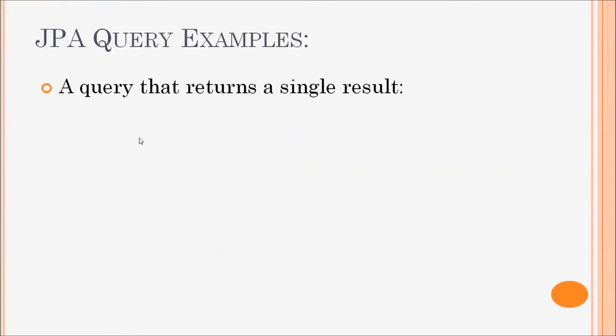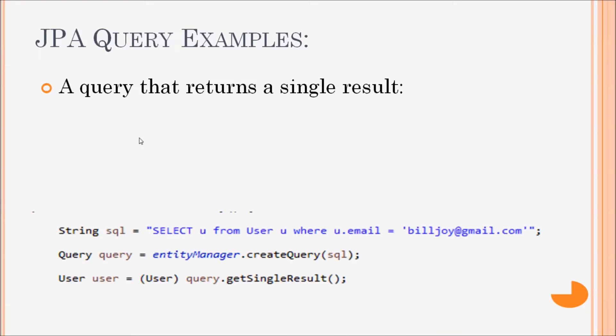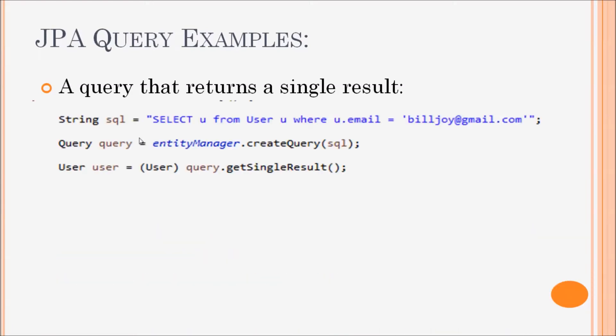This is a code example that shows you how to execute a query that returns a single result. You can see the query here: select u from user u where u.email equals user at gmail.com.